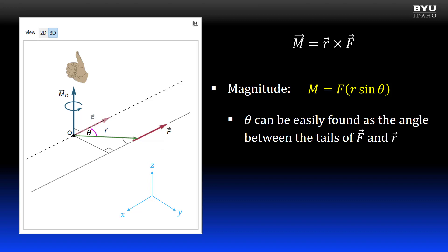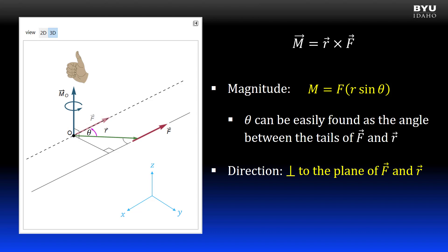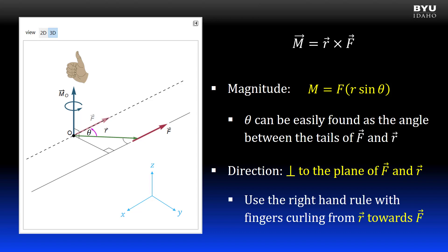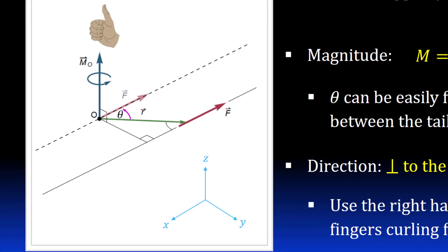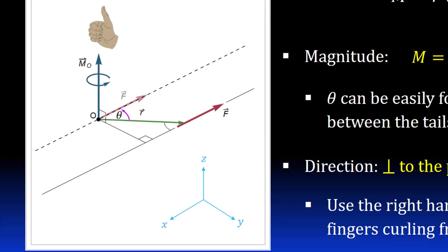That means we either slide vector R over until it is tail to tail with the force, or slide the force vector back to the tail of the position vector. The direction of our moment vector is perpendicular to the plane on which both vector F and vector R lie. To determine the sign — negative or positive — we use the right-hand rule. We always curl our fingers from the position vector to the force vector. Our thumb then shows the direction. In this example, if I use my right hand and curl my fingers from R towards F, my thumb points in the positive z direction.